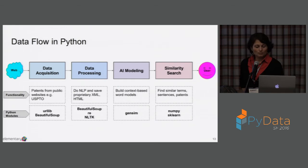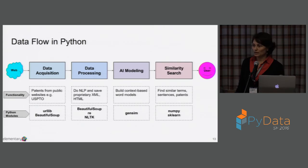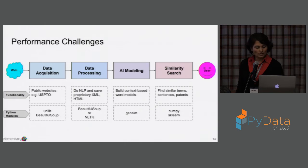The specific packages — most of you are familiar with these. Beautiful Soup, which is awesome, and we use a lot of regular expressions. NLTK was what we started out with for some of the data processing. Gensim, which is awesome, really fast for AI modeling. And for similarity search we further use NumPy and scikit-learn.